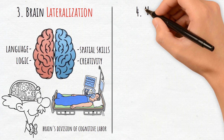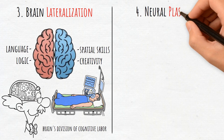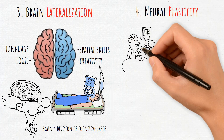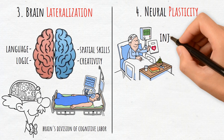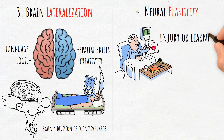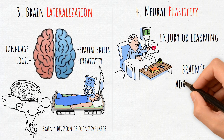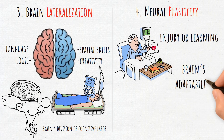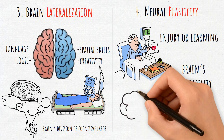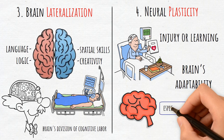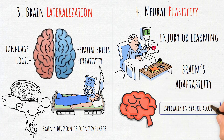4. Neuroplasticity. Neuroplasticity is the brain's ability to reorganize after injury or learning. It shows the brain's adaptability, with functions moving to undamaged regions, especially in stroke recovery.